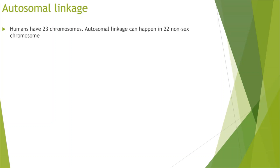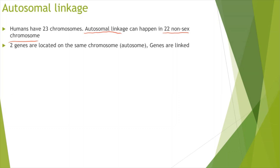Moving on to autosomal linkage. Humans have 23 chromosomes. Autosomal linkage can happen in the 22 non-sex chromosomes, also known as autosomes, and we have one sex chromosome. Autosomal linkage is where two genes are located on the same chromosome or the same autosome — we say the genes are linked. This means we would need a dihybrid cross involving two characteristics.